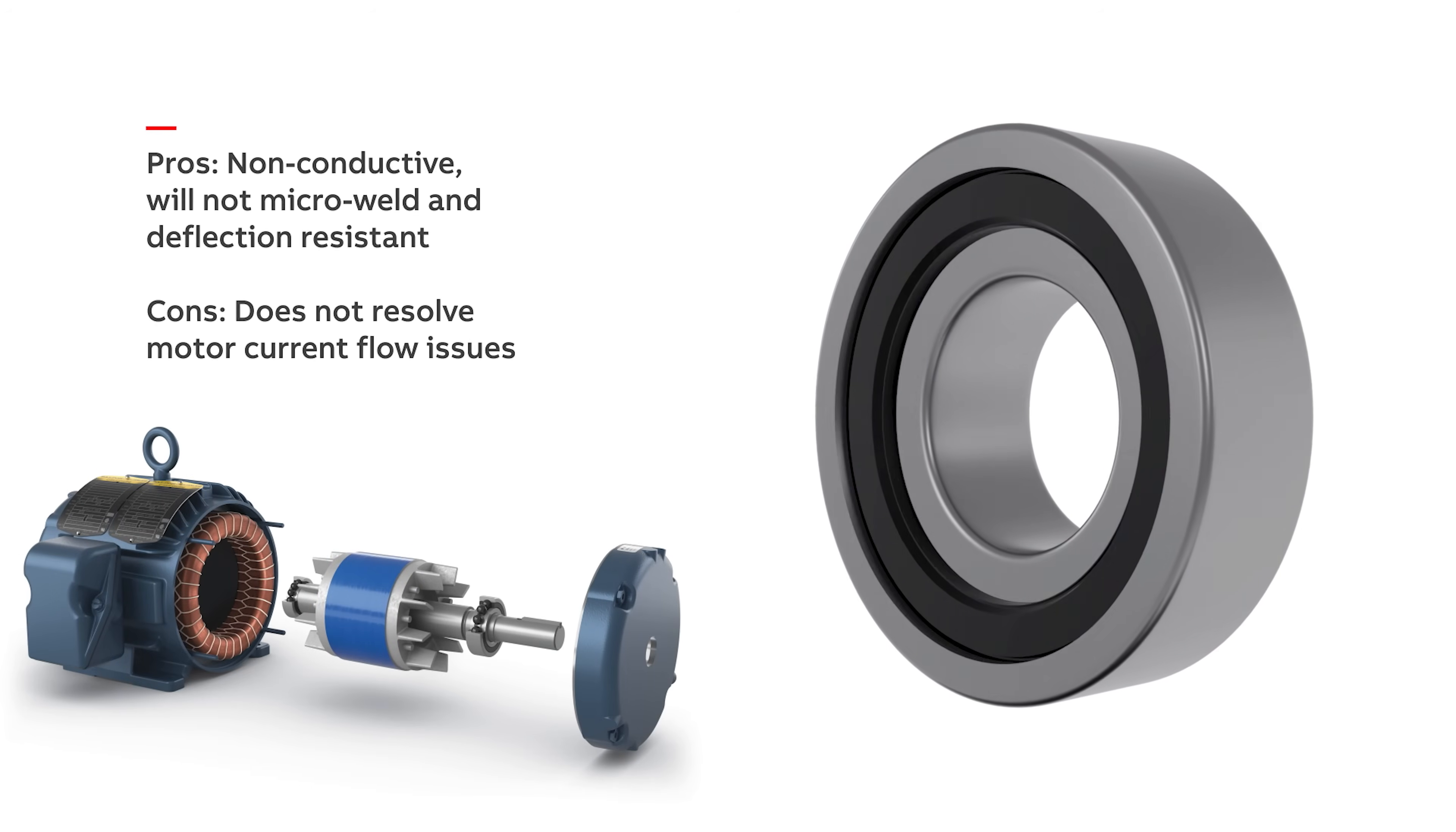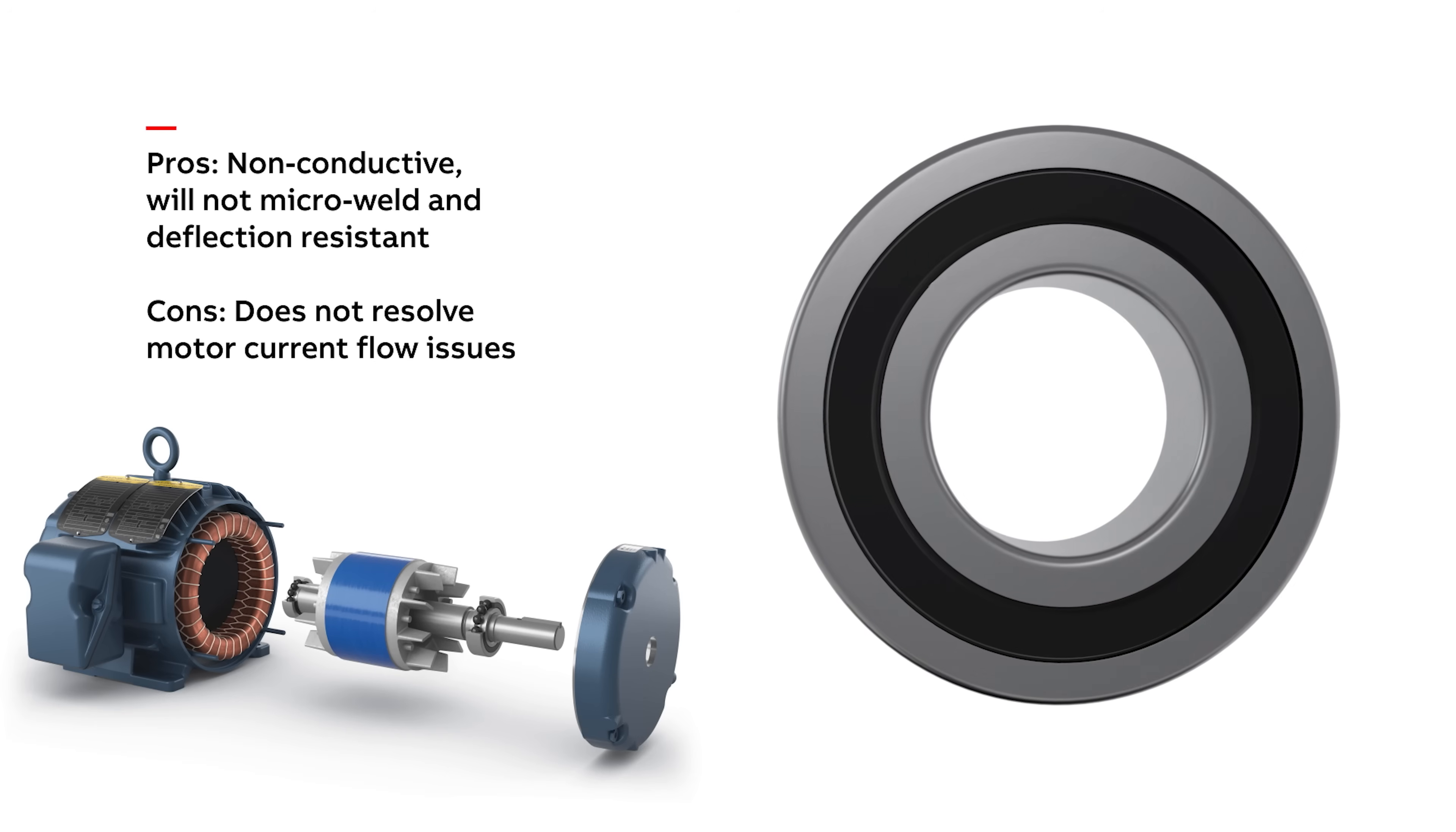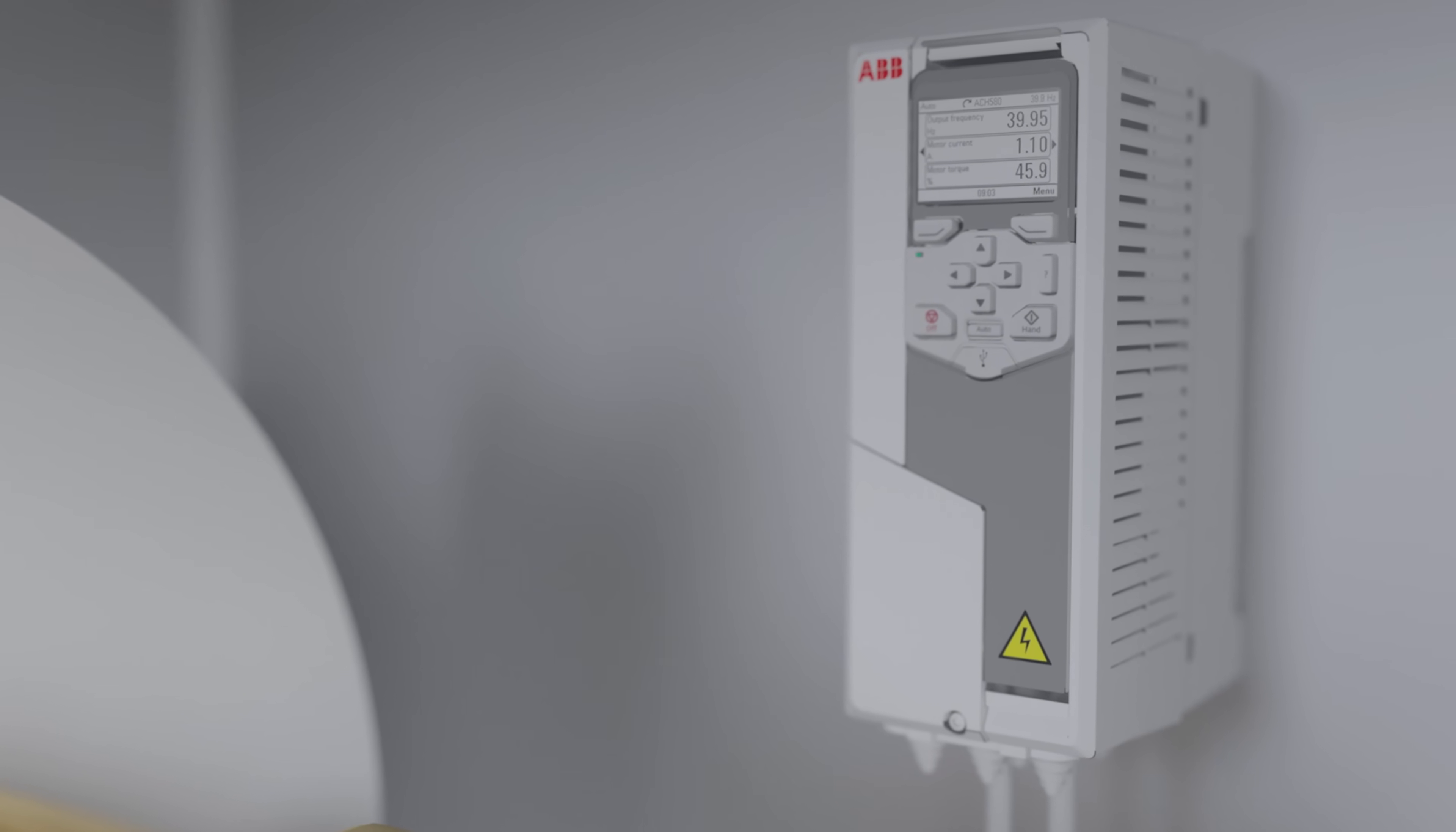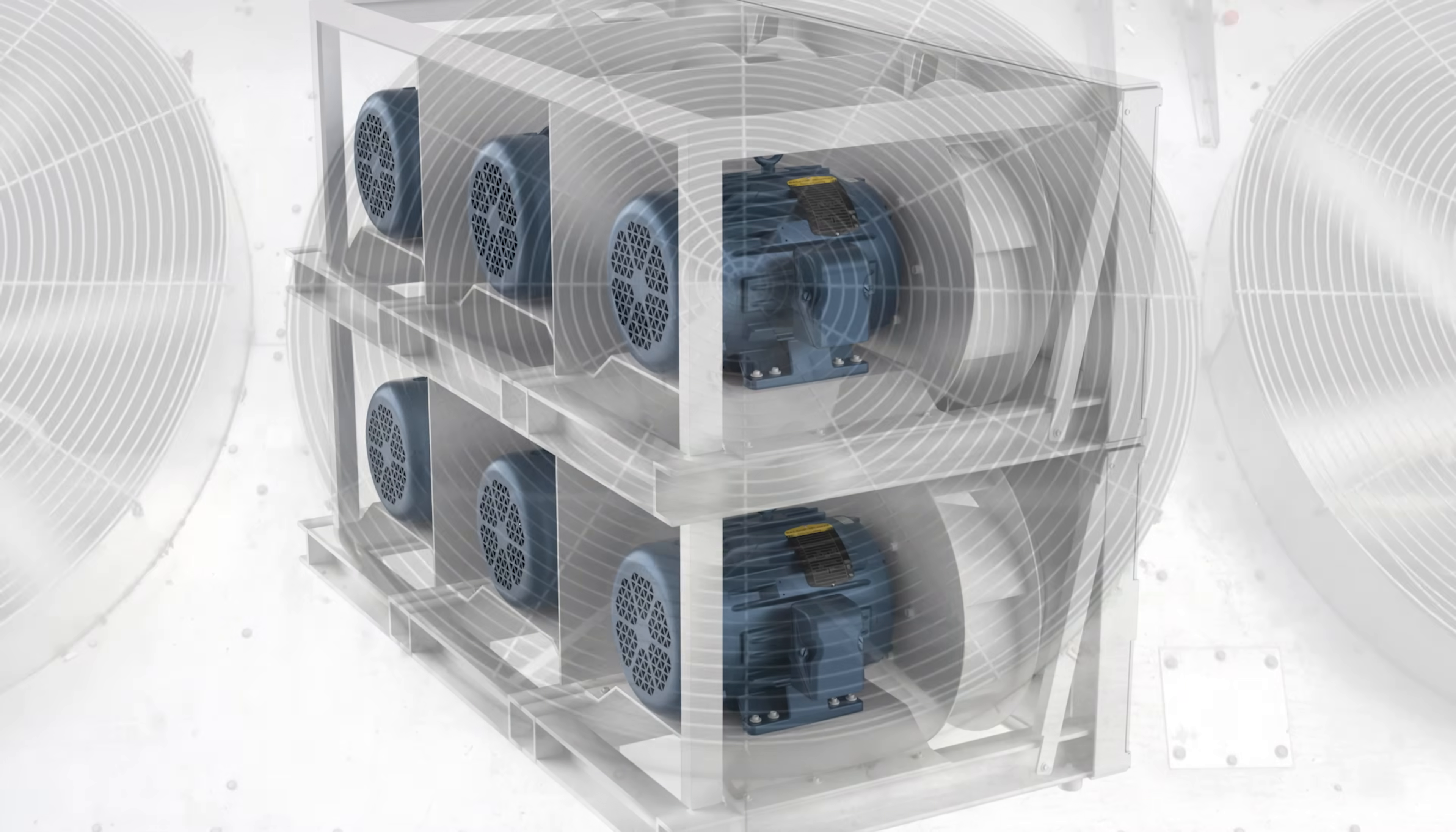However, the current will seek a path to ground, which means it will most likely travel through the driven equipment. Since ceramic bearings will not remove the current from the rotor, only specific applications, such as direct drives or equipment utilizing non-conductive couplings, are recommended for motors with ceramic bearings.